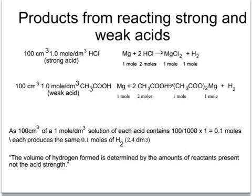So from 0.1 of a mole of each of those acids, then we would produce the same 0.1 of a mole of hydrogen, or 2.4 cubic decimeters. So even though the reactions will occur at different rates, the eventual volume of hydrogen will be the same in each case because it's determined by the amount of reactants present, not the acid strength.